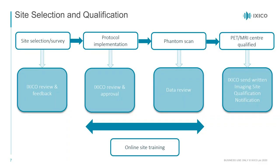Good site setup ensures consistency of quality data throughout a trial's duration. This starts with site selection—ensuring sites have a TAU tracer distribution network, considering the tracer's relatively low half-life. Site surveys capture general PET imaging capabilities and identify planned scanner upgrades that could cause data consistency issues in longitudinal studies. Once sites are selected, Execo implements imaging protocols, provides phantom scanning instructions, reviews test scans, and provides site training.